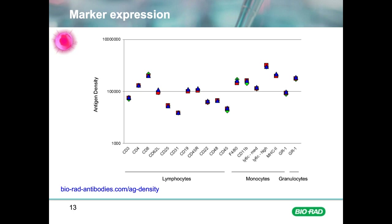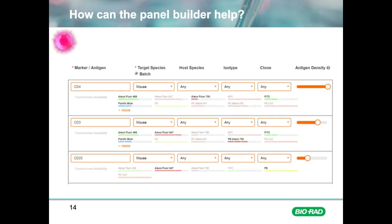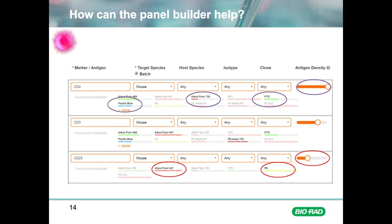Looking at three markers in closer detail, we can see that CD3, CD4, and CD25 have three different levels of expression, with CD4 being the highest and CD25 being the lowest, and this will affect which fluorophore should be chosen when building your panel. We can input this antigen density information into our panel builder. If we select a low antigen density for CD25, only the bright fluorophores are available to choose and the dim fluorophores are excluded. Conversely, for CD4 with high antigen density, the bright fluorophores are excluded, helping you make the right choice.